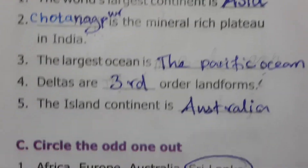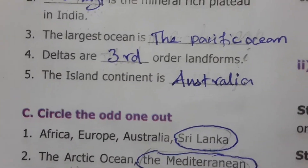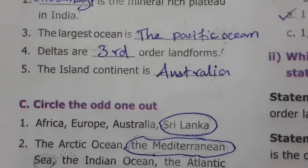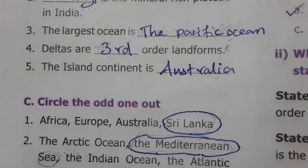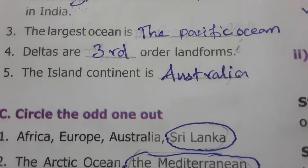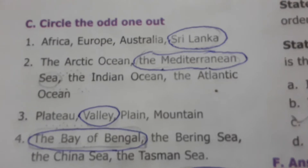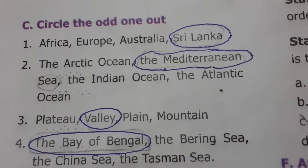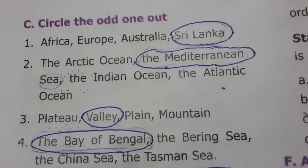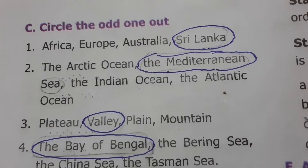Fill in the blanks: The world's largest continent is Asia. Chota Nagpur is the mineral-rich plateau in India. The largest ocean is the Pacific Ocean. Deltas are third order landforms. The island continent is Australia.